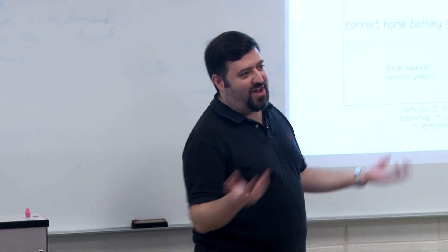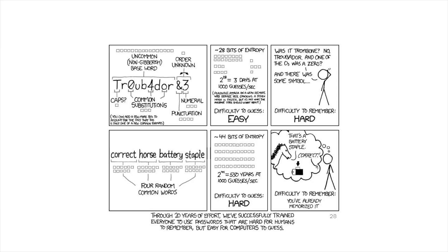Here's an XKCD which I imagine all of us have seen. The common way a lot of people do passwords is the worst of both worlds: they're hard for humans to remember and easy for computers to guess. A computer could brute-force those at a thousand guesses per second in three days — but realistically, a million guesses per second is extremely possible, so it would be three thousandths of a day.